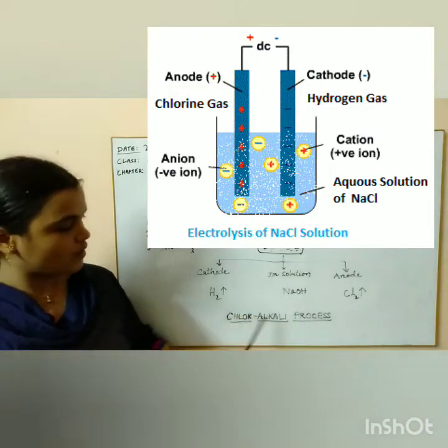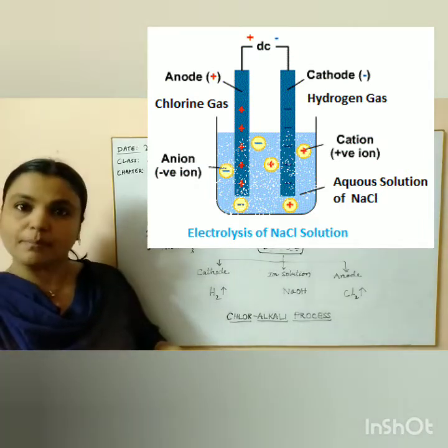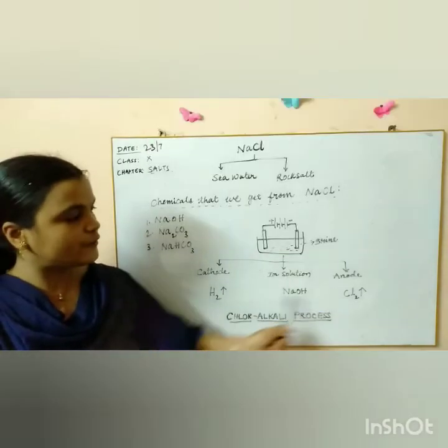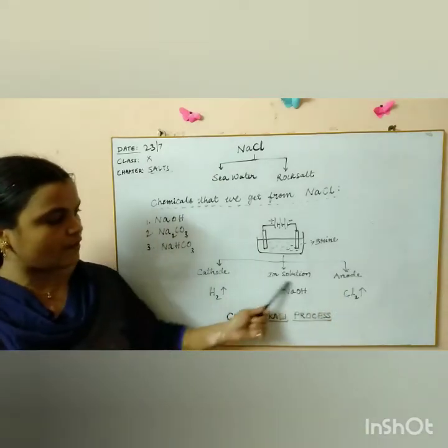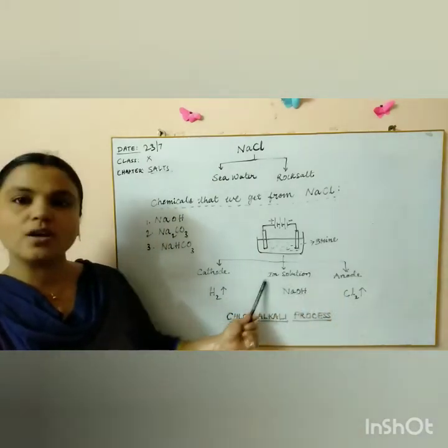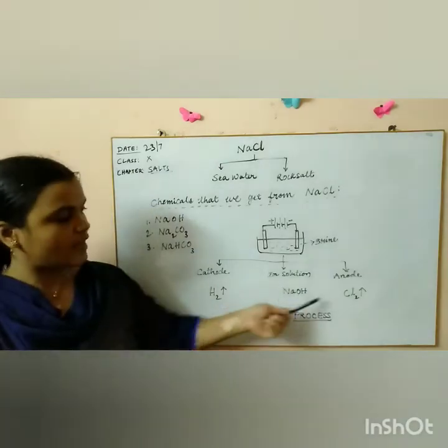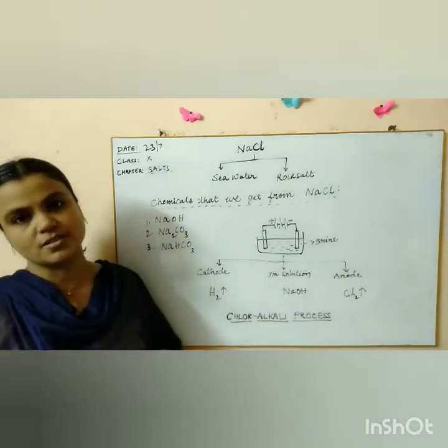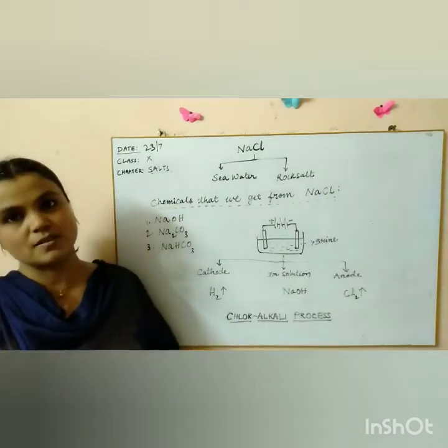So this process is called as chloralkali process because very useful components are formed here. Chlorine gas is formed and a very strong base. What is this sodium hydroxide? Is it an acid or a base? It's a very strong base. A very strong alkali is produced in this reaction and that's the reason why it's called as chloralkali process.